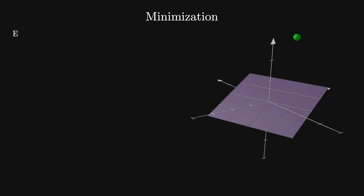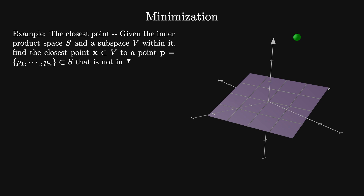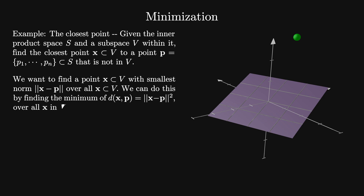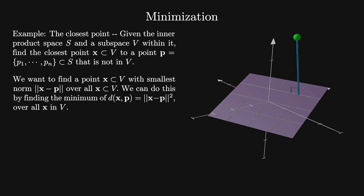Imagine we want to find the minimum distance between some point p and a hyperplane v, which is a subspace of some inner product space. We want to find the point x in the subspace v that has the smallest norm or distance between x and p of all possible vectors in v. We do this by minimizing the function d, the squared norm of x minus p, over all x in v.